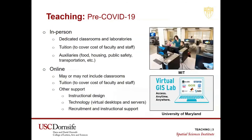So that's the backdrop for what I'm going to say about teaching. Teaching pre-COVID: we had dedicated classrooms and laboratories — the top picture on the right is the GIS lab at Massachusetts Institute of Technology, for example. Typically, universities charge tuition to cover the cost of faculty and staff. Many universities are also set up to provide food, housing, public safety, transportation, and so forth. Our inability to provide these auxiliaries to students that are not on campus has been a large part of our budget problems.